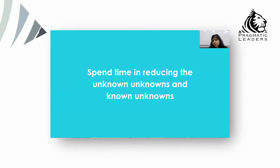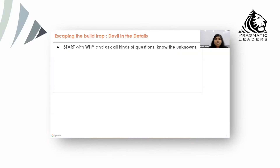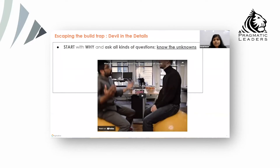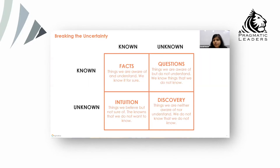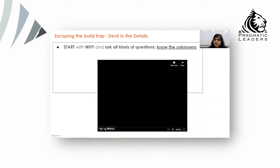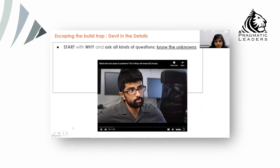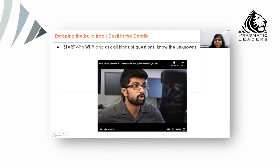Spend time reducing the unknown unknowns and unknown knowns. Next is how do you escape — I call this the 3D framework. The first D is devil in the details. The moment you know a fact, have a question, or are in discovery mode, you should get to the bottom level. Let me play a video called the 5 Whys framework — let me know when you're able to hear the sound.